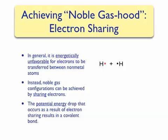We know from previous chapters that hydrogen, along with many other elements, exists as a diatomic molecule. The reason for this is that when two hydrogen atoms share electrons, this allows each electron to feel as if it has an electron configuration very similar to a noble gas — in this case, helium.